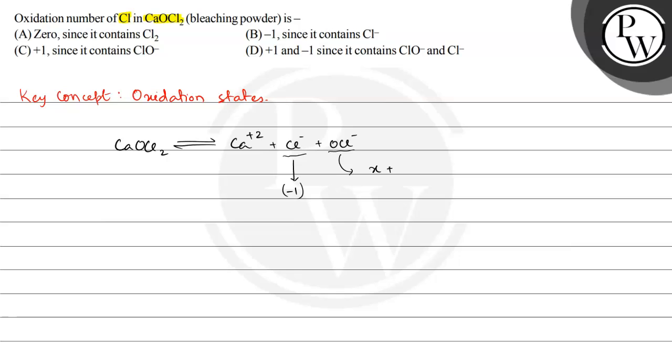The oxidation state of oxygen is -2 always, that is equal to the net charge on OCl- which is -1. So x minus 2 equals -1.